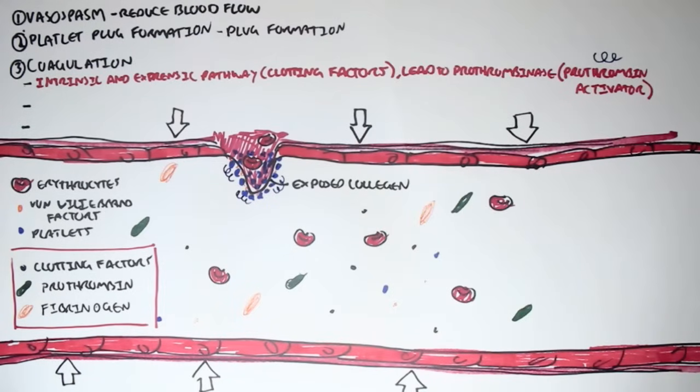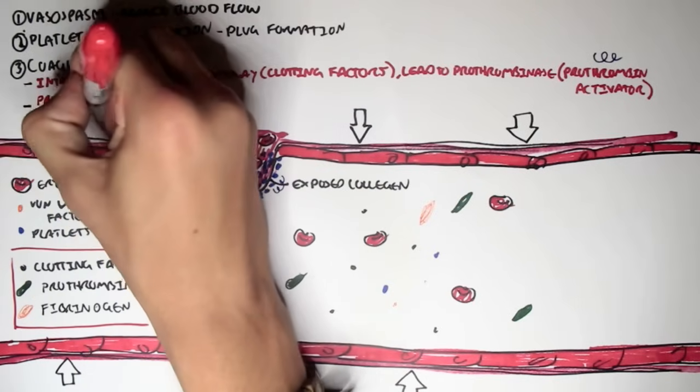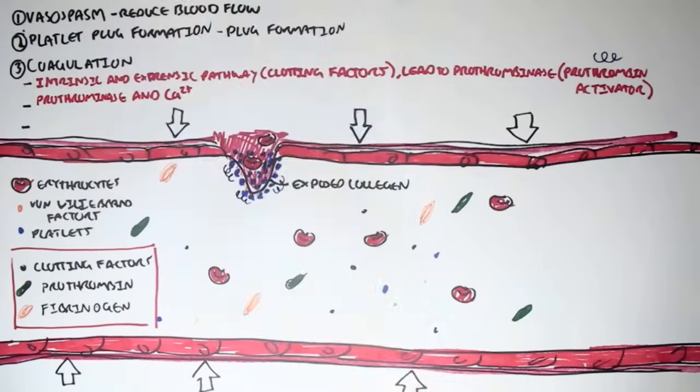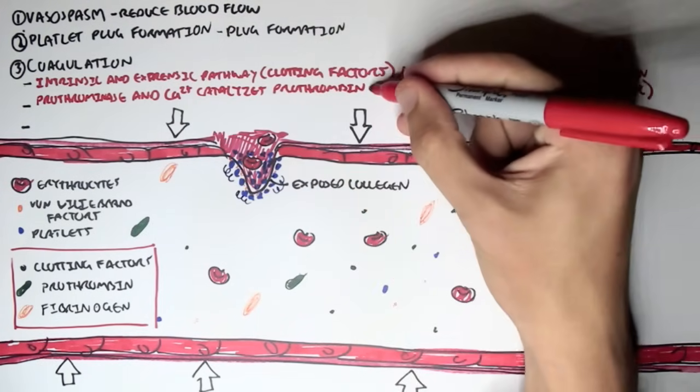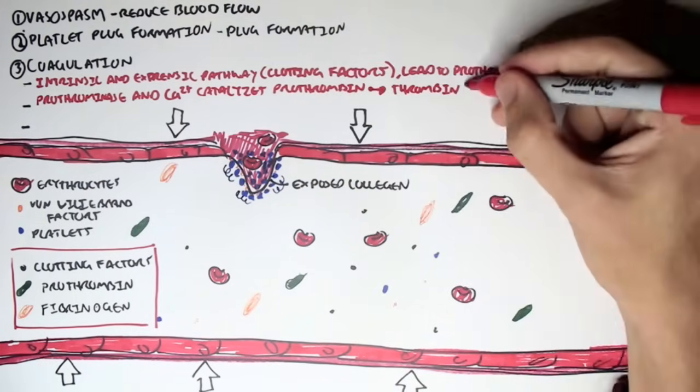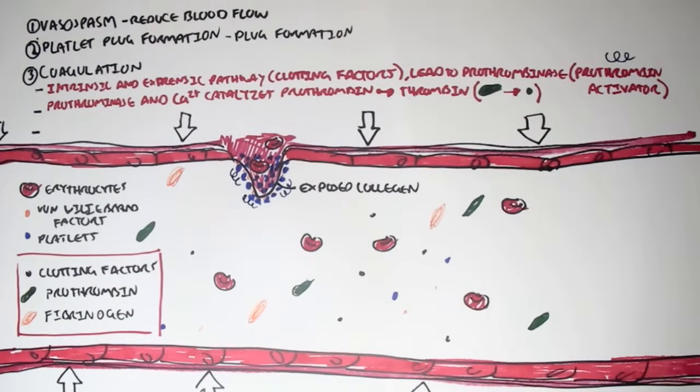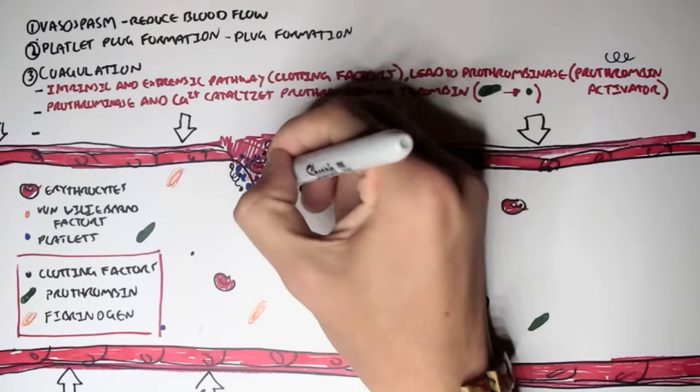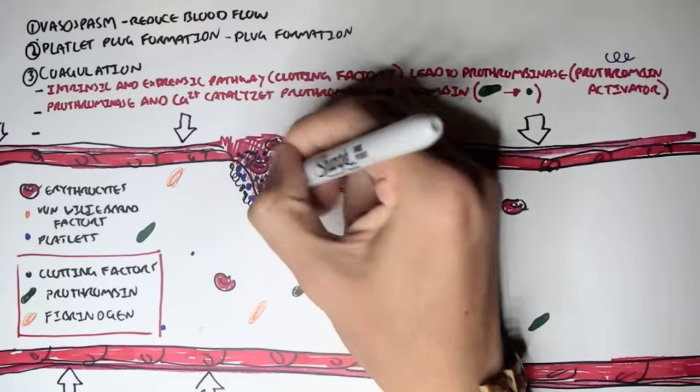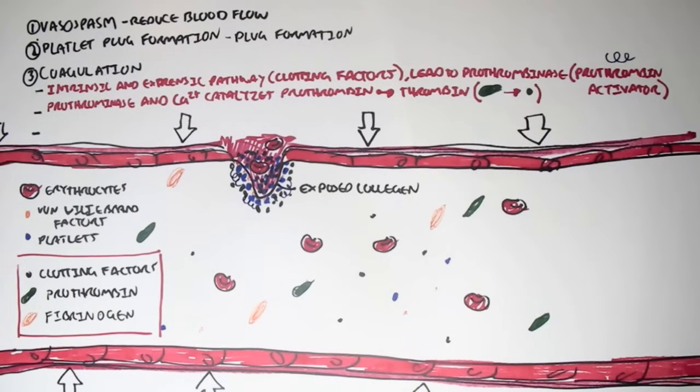Now, the second step of coagulation is where the prothrombinase, the squiggly blue thing, with some calcium ions, actually catalyzes the conversion of prothrombin, this green stuff, into thrombin. So, here we have prothrombin, this big green thing, which gets catalyzed into thrombin, this small green thing. And so, we have many thrombins now.